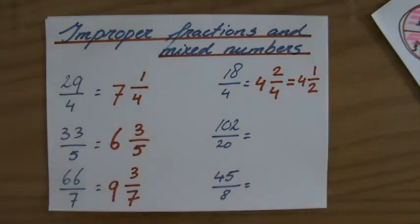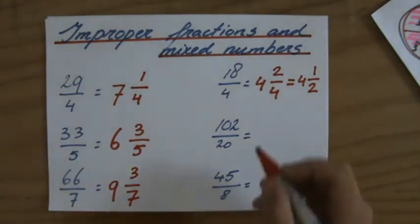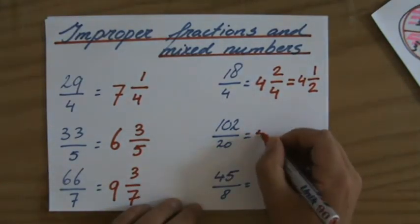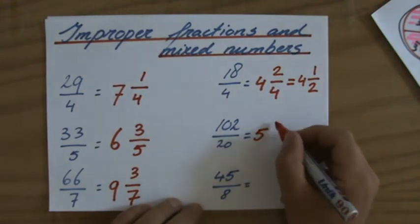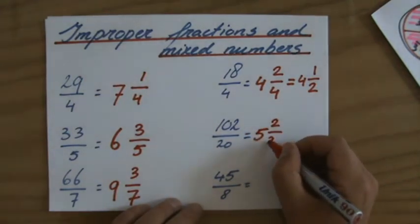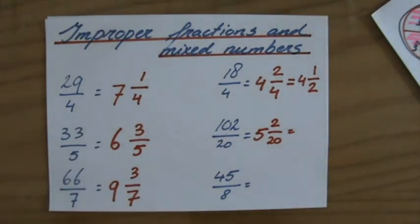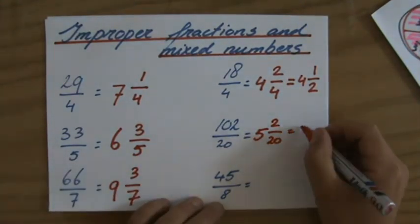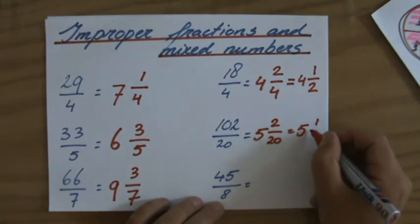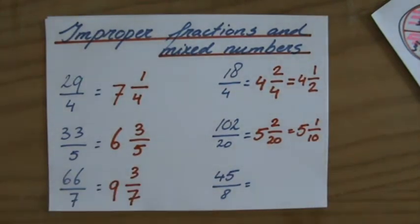102 divided by 20. 102 over 20. Well, that is 5. 5 times 20 is 100. My remainder is 2 over 20. Again, both of them are even, which means they at least have a factor of 2 in common. And if I take that factor out, 5, 1 over 10. That is my final simplified fraction.